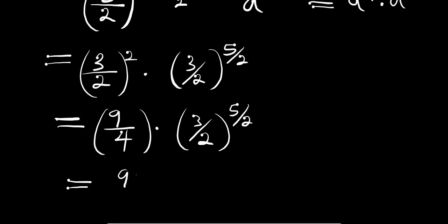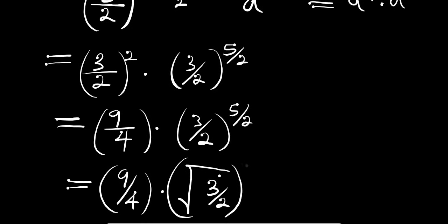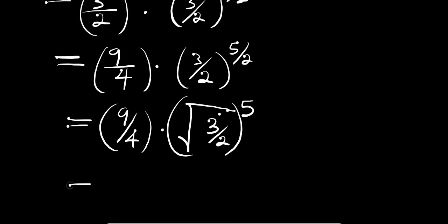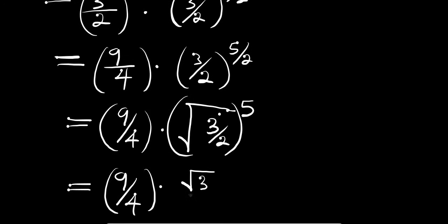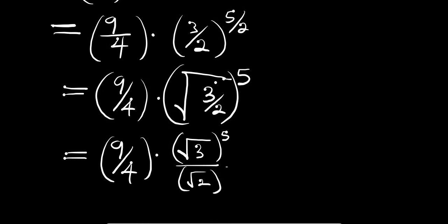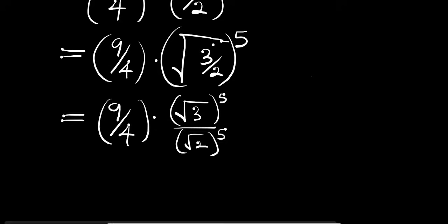We can eliminate the 1 over 2 in the exponent by taking the square root, giving us 9 divided by 4 times the square root of (3 divided by 2) to the power of 5. This can be written as 9 divided by 4 times (root of 3) to the power of 5, divided by (root of 2) to the power of 5. So we need to find (√3)^5 and (√2)^5.